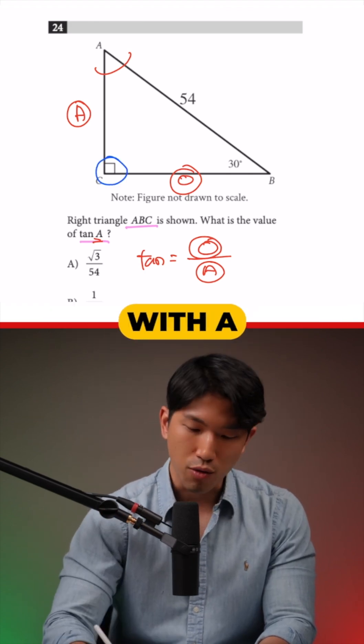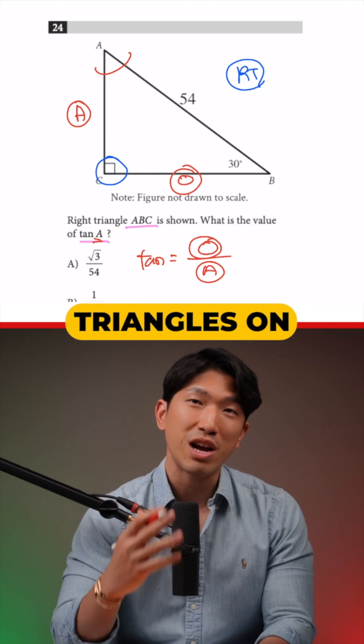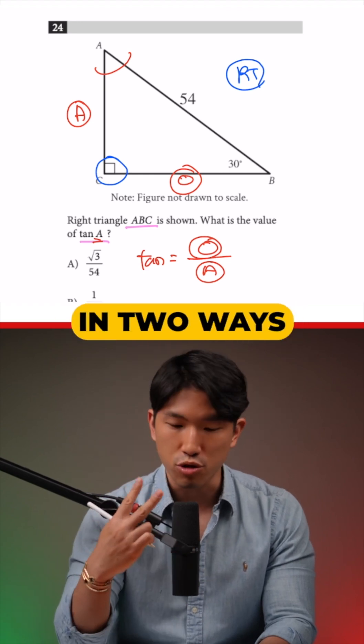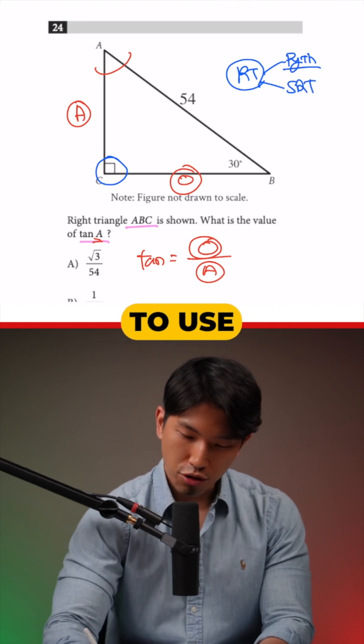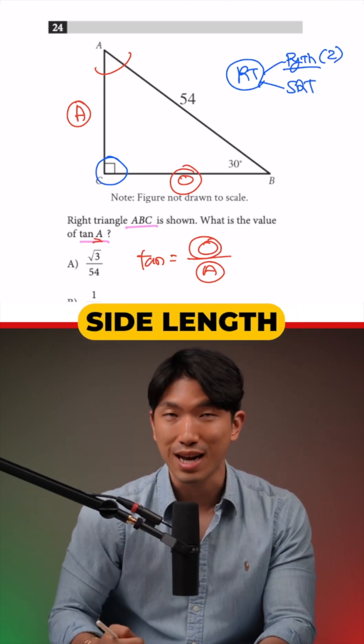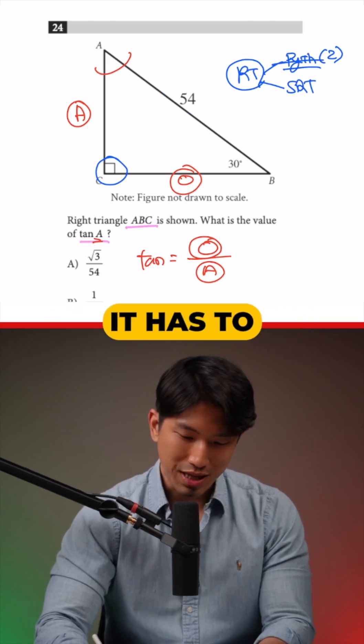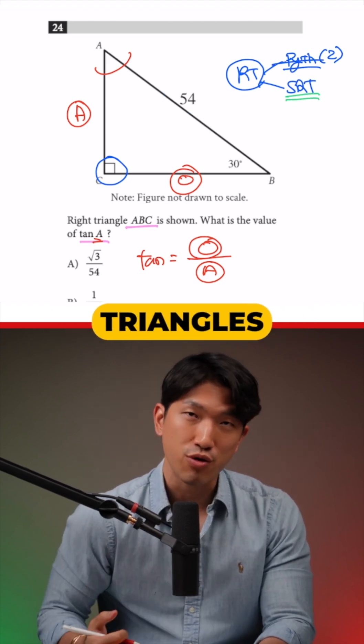But the good news is that we are working with a right triangle. And when it comes to right triangles on the SAT, it can only go in two ways. You either find the missing side length through Pythagorean theorem, or special right triangles. And for you to use the Pythagorean theorem, you need to have at least two known side lengths. Right now, we only have one, which means it has to be solved through special right triangles.